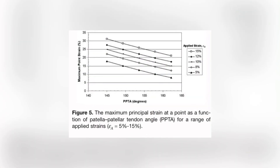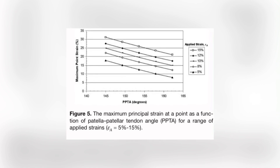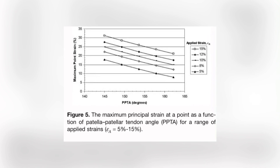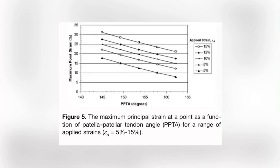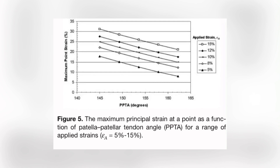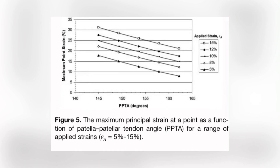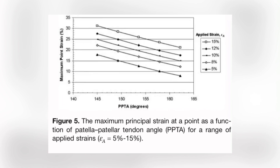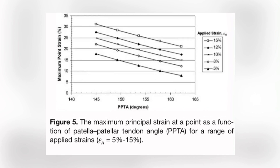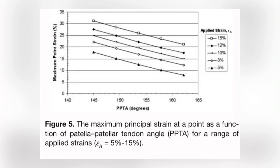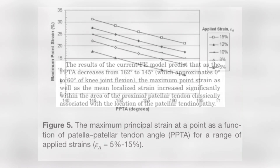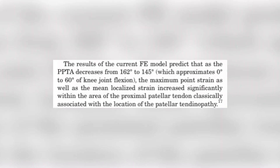This graph is going down because they're testing different strain rates — applied strain. As you put more strain, it's more strain on the tendon in general. But at 145 degrees, we see the most strain on that one spot.